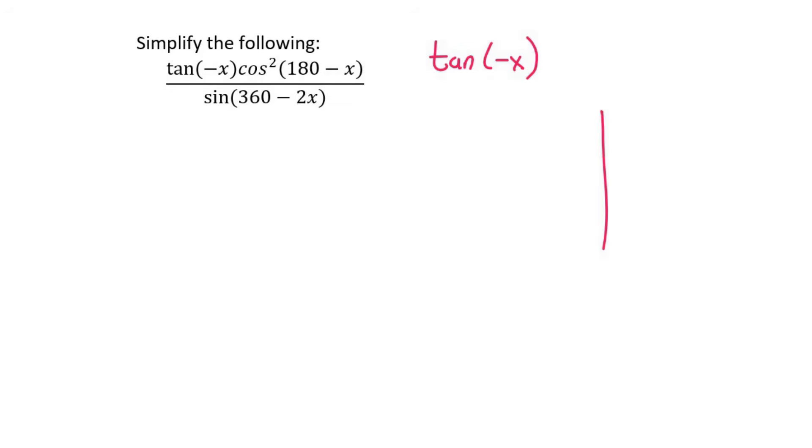If we look on our CAST diagram, we know that we have 180 minus x, 180 plus x, and 360 minus x. We don't have a minus x. And what a lot of students do is they put the negative outside as a common factor, but that is completely wrong.